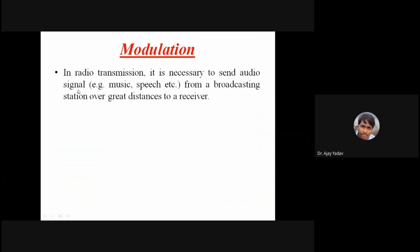In radio transmission it is necessary to send the information signal from a broadcasting station over a great distance to a receiver — even two or three thousand kilometers away. Now suppose the distance between two persons is only 10 to 20 feet; person A will easily communicate with person B. But if person A is 1000 kilometers away from person B, will communication still be possible without using any device?